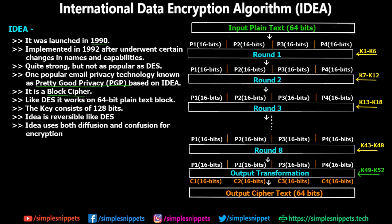IDEA is a block cipher — it operates on 64-bit blocks. The input plain text is 64 bits and the output ciphertext is again 64 bits, just like DES. The key consists of 128 bits, which is different from DES which used 56-bit keys. IDEA is reversible like DES, meaning it is symmetric in nature — only one key is used for both encryption and decryption. IDEA uses both diffusion and confusion: confusion means substitution and diffusion means transposition.